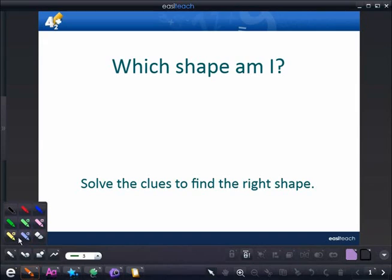We can easily grab our pen annotation tools, where we have a selection of pens, highlighters, and an eraser, and we can quickly annotate on our screen. Just as easily, we can select the eraser and erase what we've just drawn.